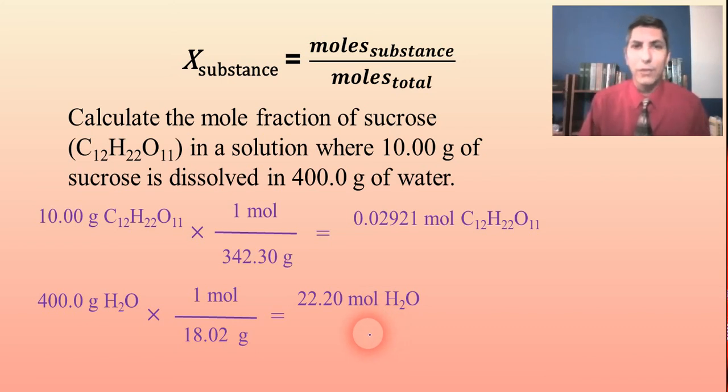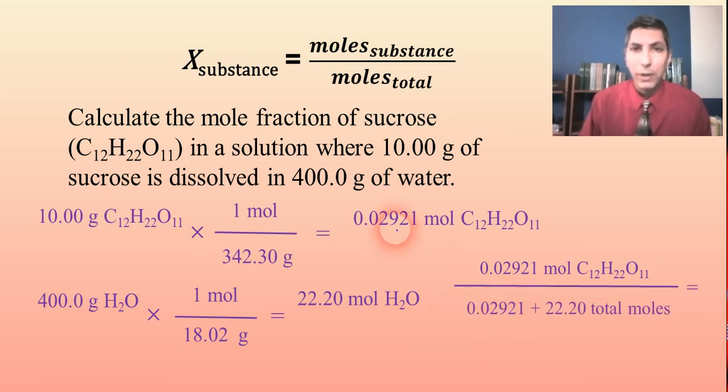Well, now we can calculate the mole fraction. So it's the moles of the sucrose divided by the total moles. So we have to add the 0.02921 plus the 22.20 moles of water. So we add those together. And if you key that into your calculator, you get an answer of about 1.314 times 10 to the negative third. And so that's the mole fraction of sucrose. So that's the X for this substance. And you could do the same thing for the mole fraction of water if you wanted to do that. Of course, you'd find that the mole fractions of all the substances in a solution or in a mixture should add up to 1 if you're doing everything correctly.